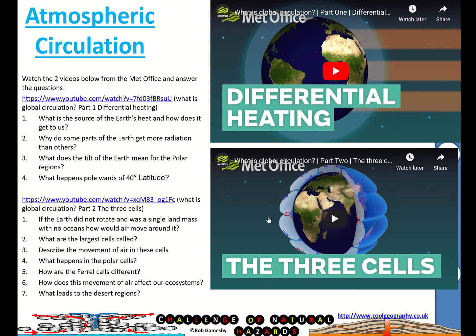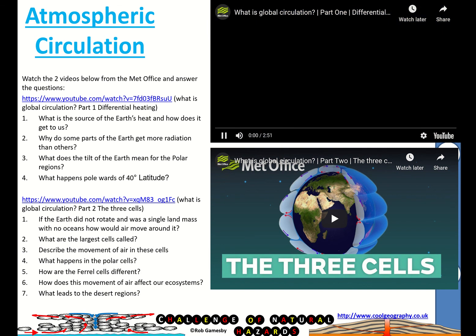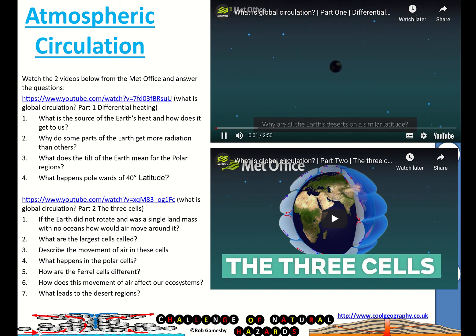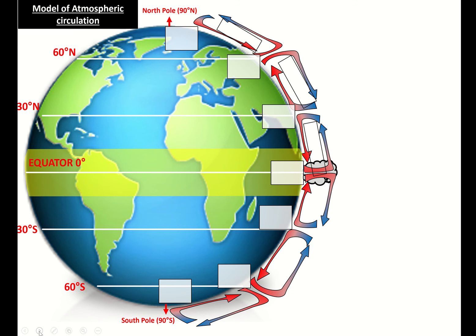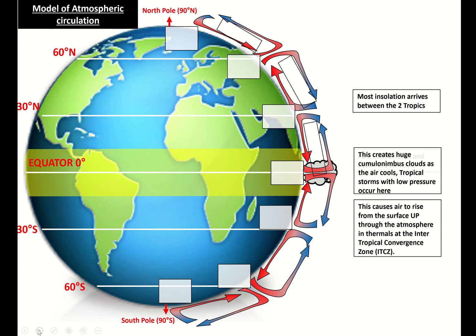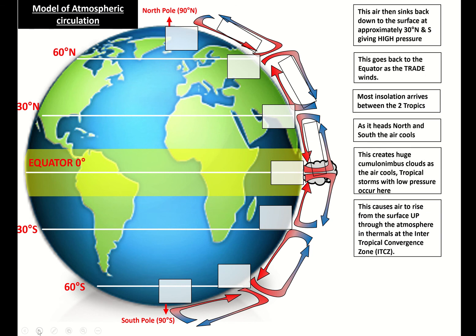So in terms of your lesson, you've got two videos to watch which explain both of those processes probably better than me. And you've got some questions to answer on those. Why are all the Earth's deserts on a similar latitude? And then you've got a diagram to fill in for the atmospheric circulation in the boxes. And I've muddled up the labels for you to put in.